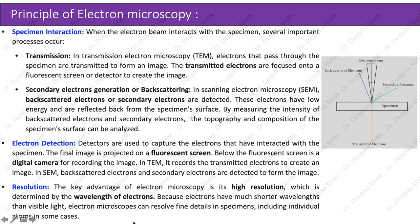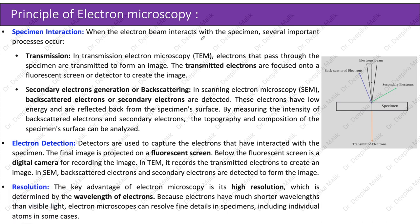Specimen interaction: when the electron beam interacts with the specimen, several important processes occur. Transmission: in transmission electron microscopy, electrons that pass through the specimen are transmitted to form an image. The transmitted electrons are focused onto a fluorescent screen or detector to create the image.